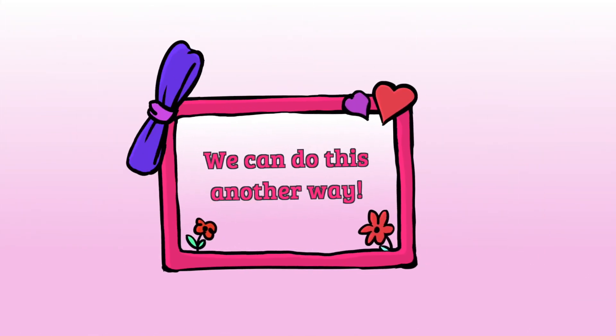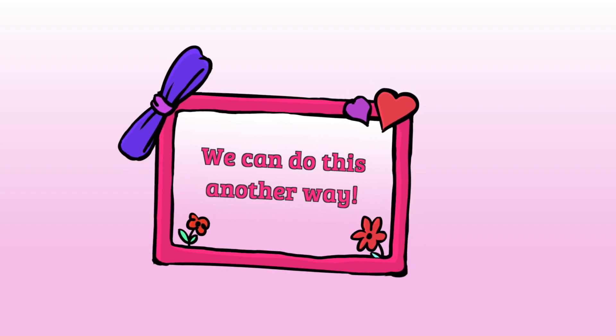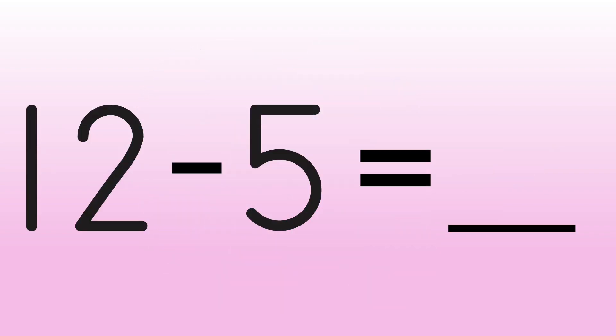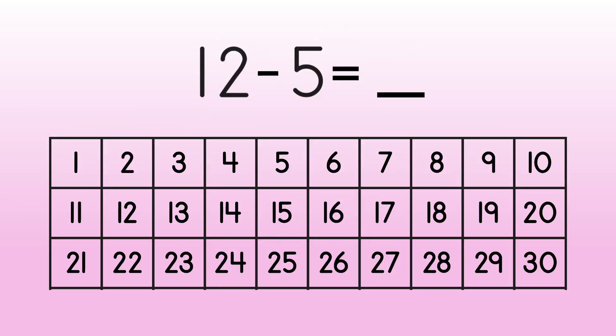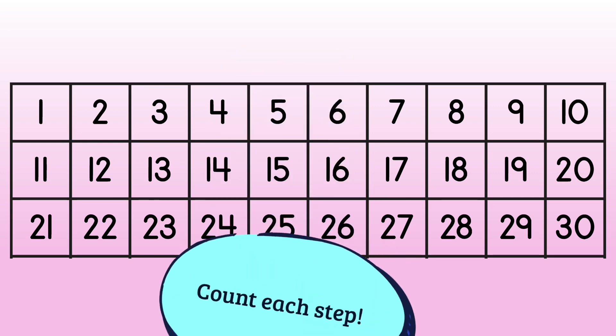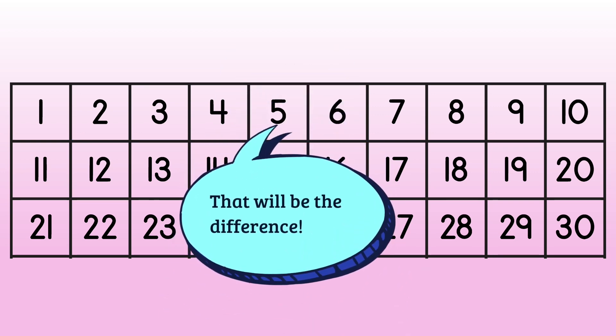There's another way we can subtract using a hundreds chart. Let's use that same subtraction sentence. 12 minus 5 equals blank. This time, we find the second number, or our subtrahend, on the hundreds chart. The subtrahend is 5. Now, we count up to the minuend, 12. We count each step. The number of steps we take is the difference or our answer.